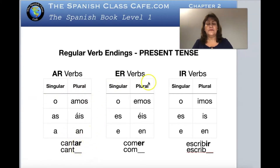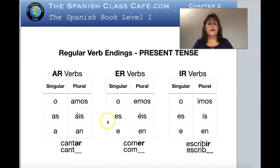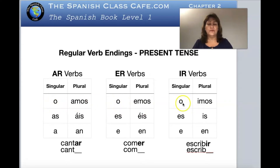Now let's look at the -er verb endings — they are very similar. If you learn the -ar endings, you mostly already know the other endings. Instead of an 'a,' we change it to an 'e' — it makes sense because these are -er verbs. In the -ir, we change the 'a's for 'i's, giving us -es, -e, -emos, -éis, and -en. The example here is comer: you take the -er out, keep the stem, and add the endings.